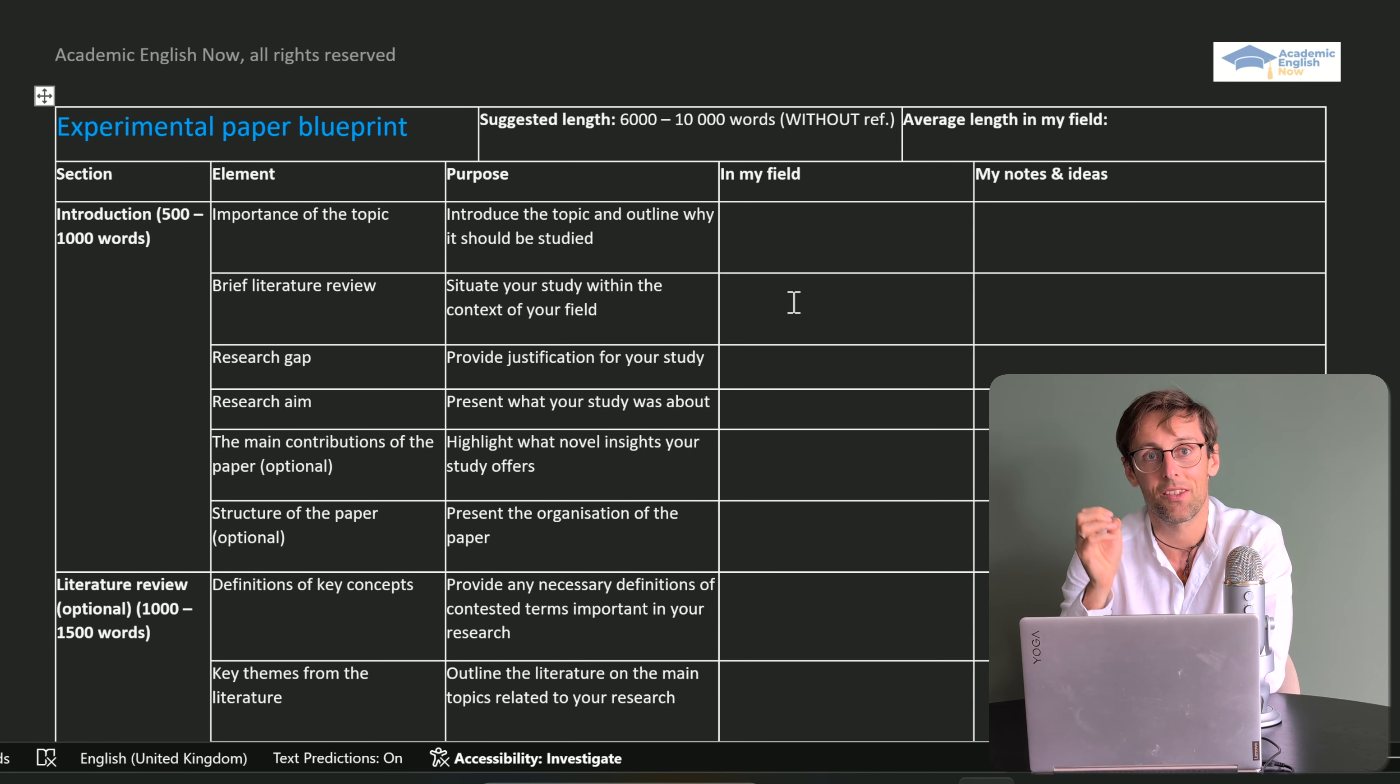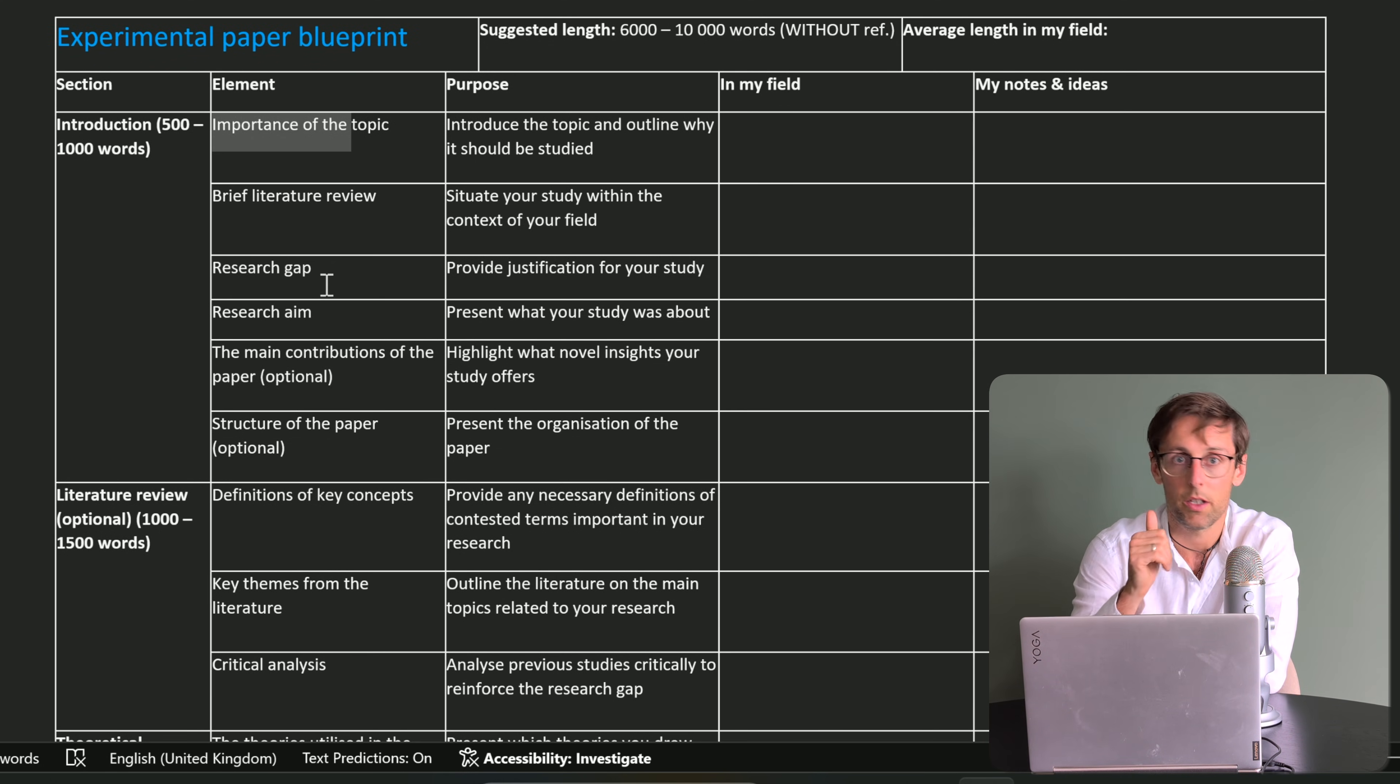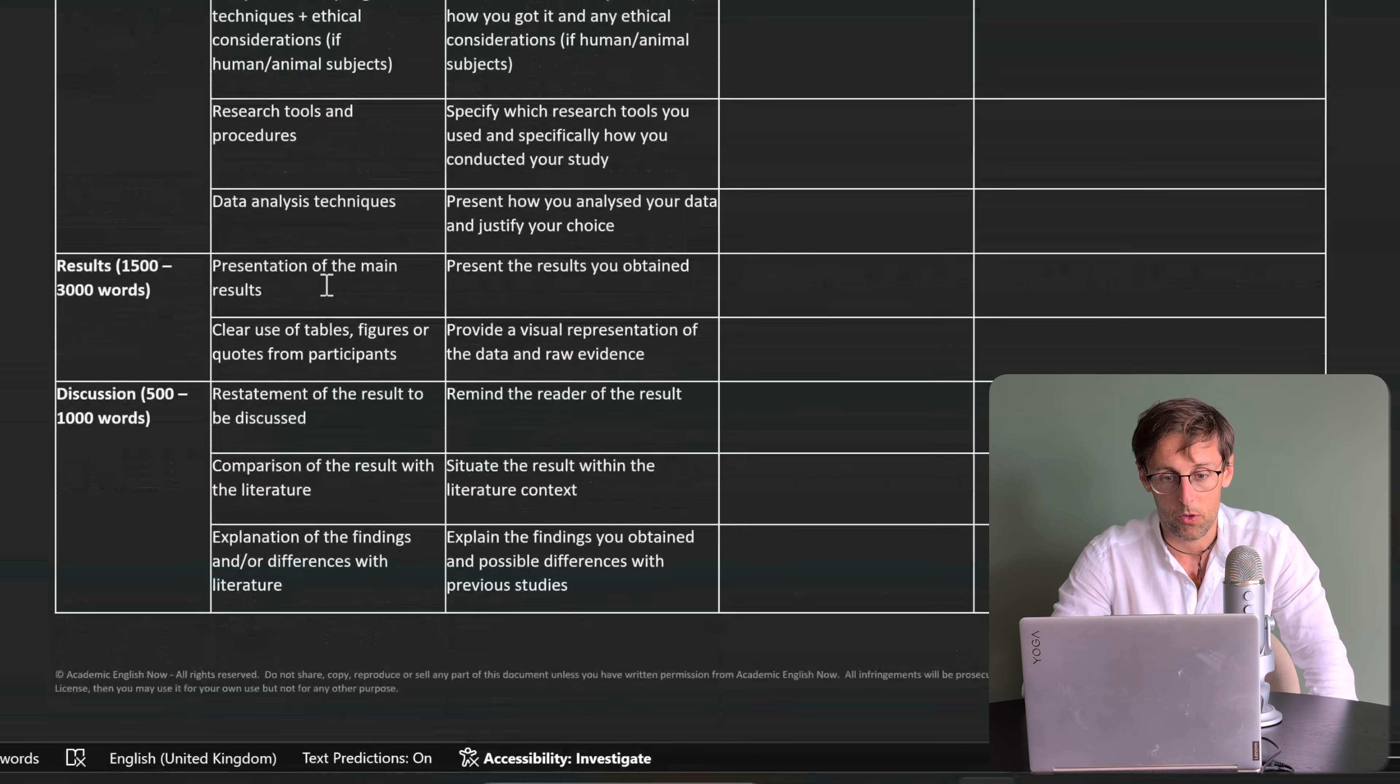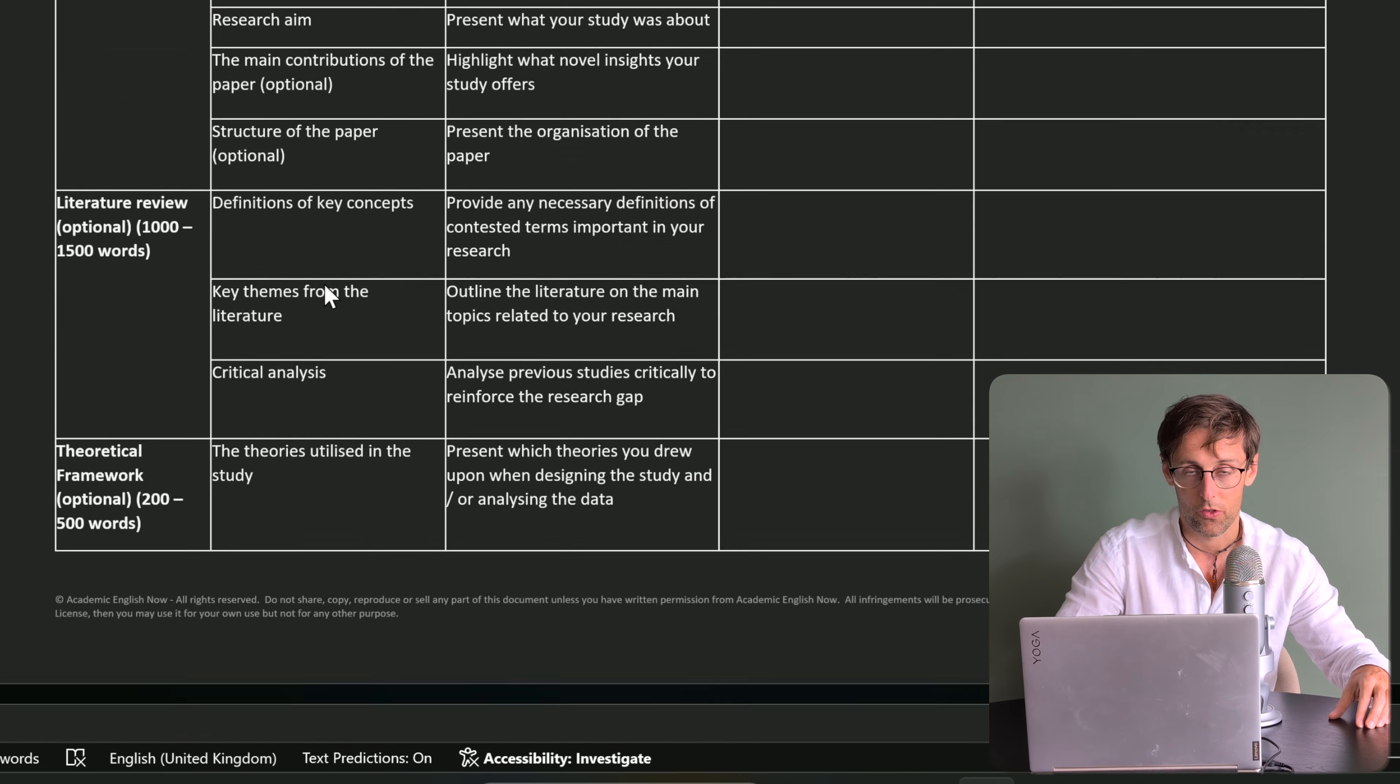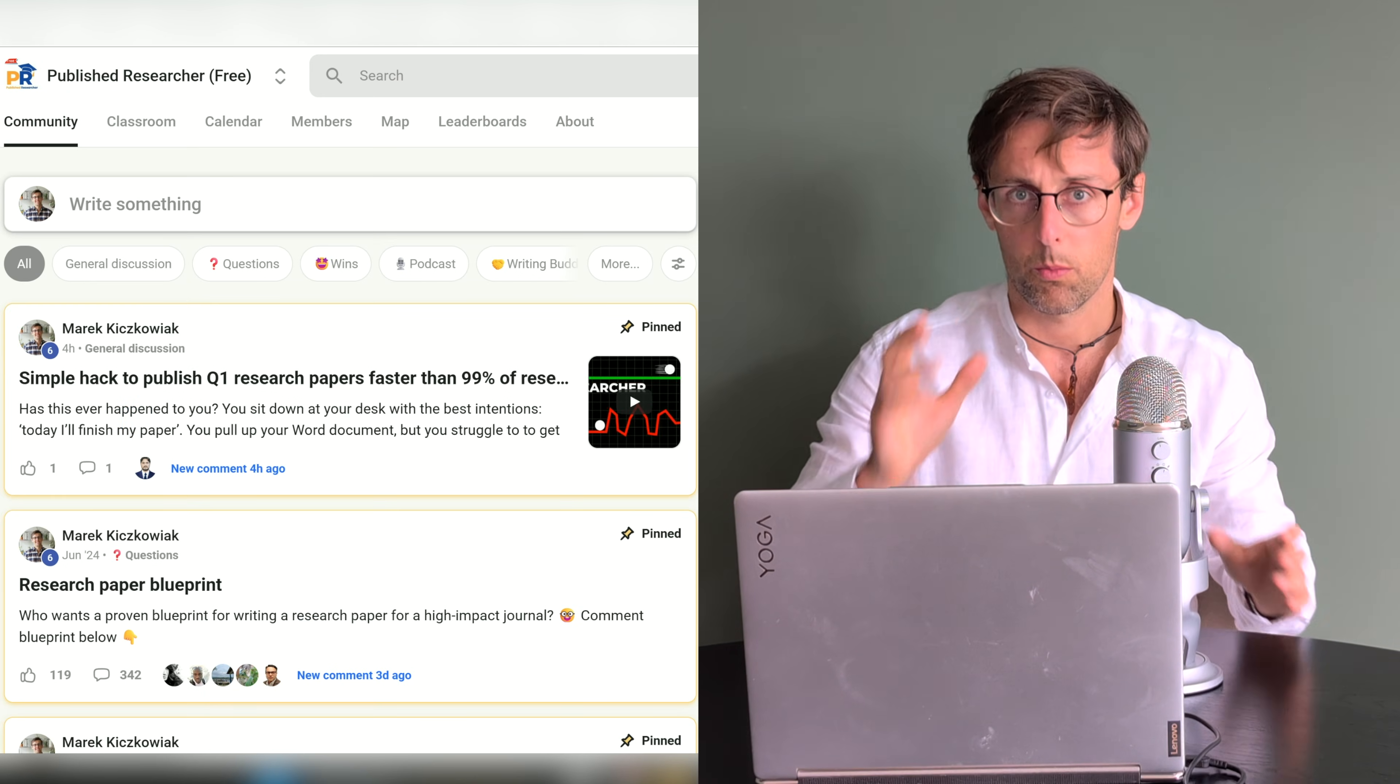Finally, add the useful language to this blueprint. Essentially, if the first element of the introduction typically in your field is to express the importance of the topic—maybe for the society or for your discipline in general or as an unresolved problem—how do the researchers do that? What are some typical phrases that you can notice in the papers that you can basically copy and paste? You want to do that for each element of the paper. Then you not only have a proven structure but you also have the language that you need in order to express your research ideas.